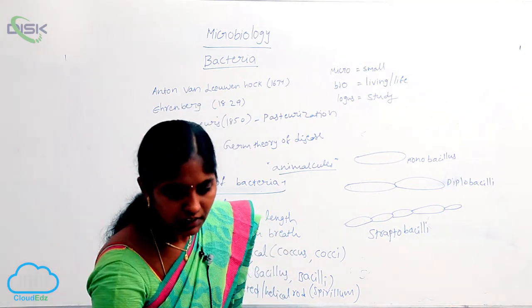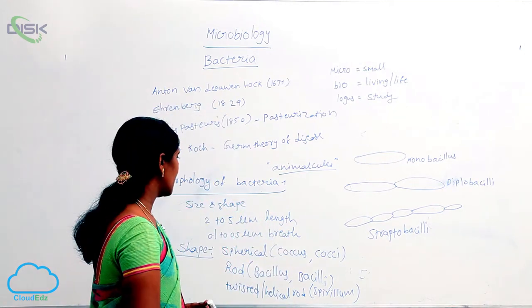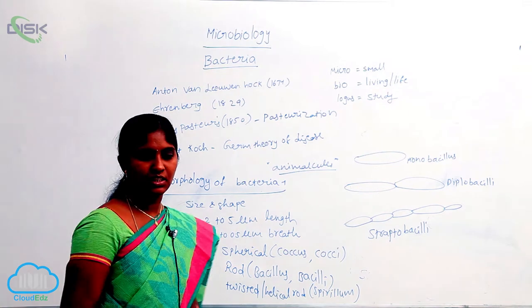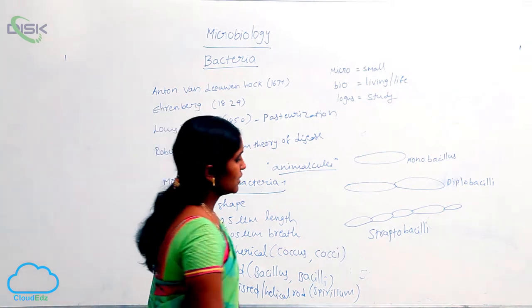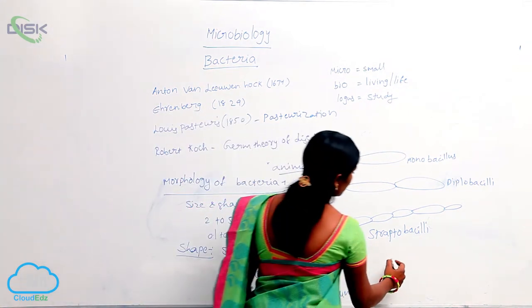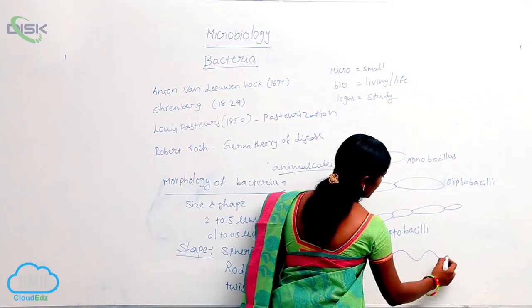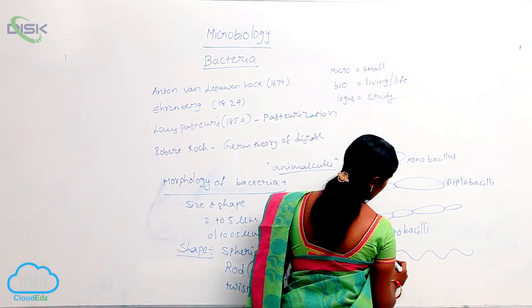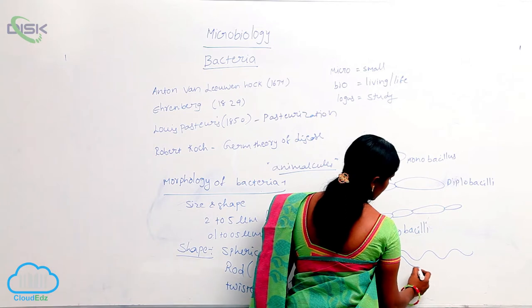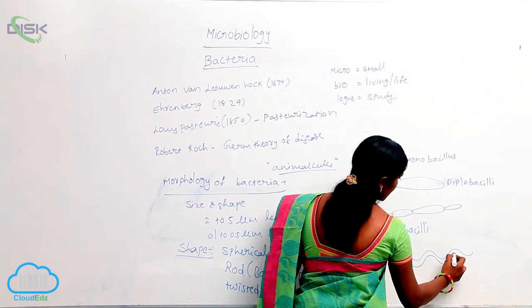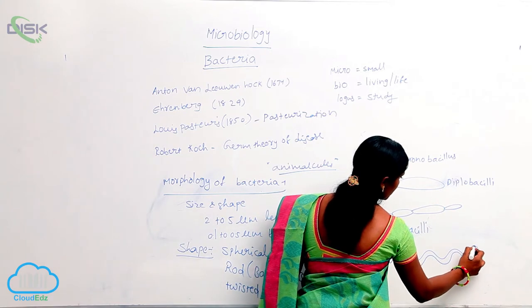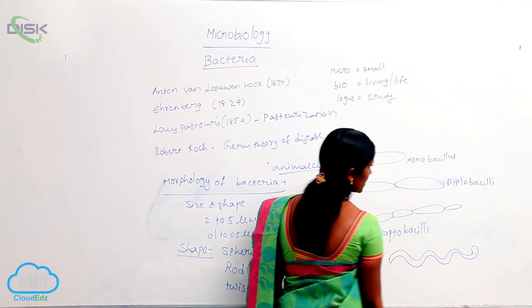Like spirillum — spirillum means that is a twisted shape. You see here the spirillum looks like this. Examples are spirochetes.